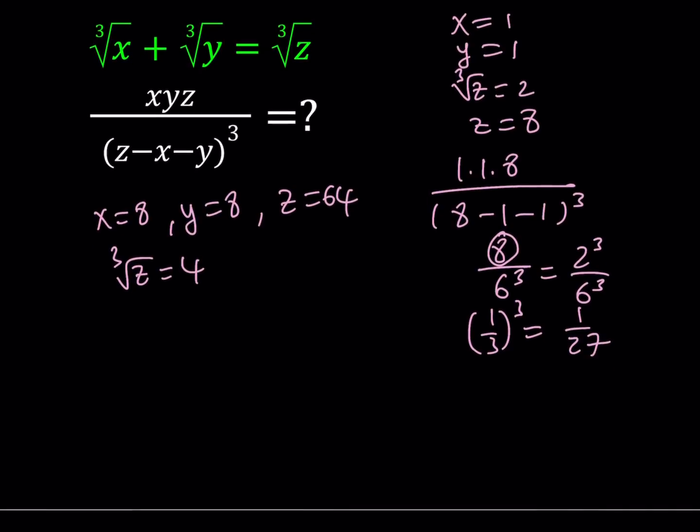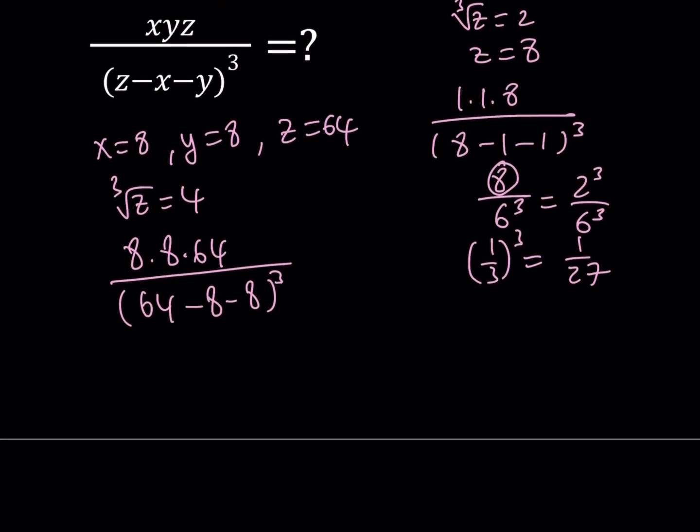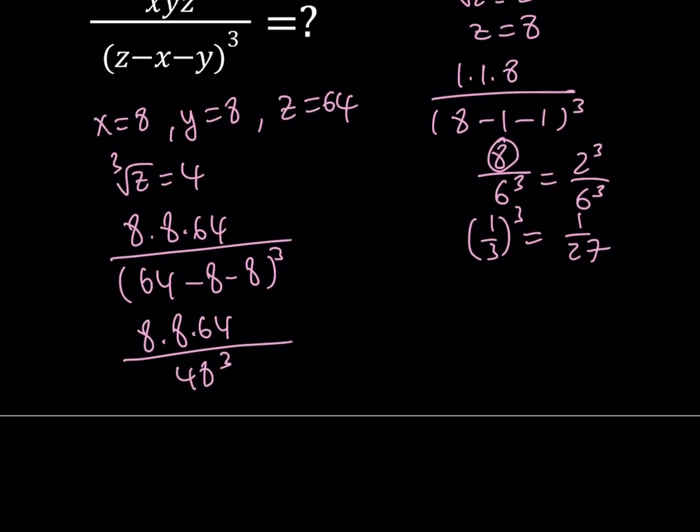And you can just go ahead and plug that in as well. 8 times 8 times 64 divided by (z-x-y) cubed. Let's go ahead and evaluate this expression and see what happens. This is going to become 64 minus 16, which is 48. So I can basically write that as 48 to the third power.